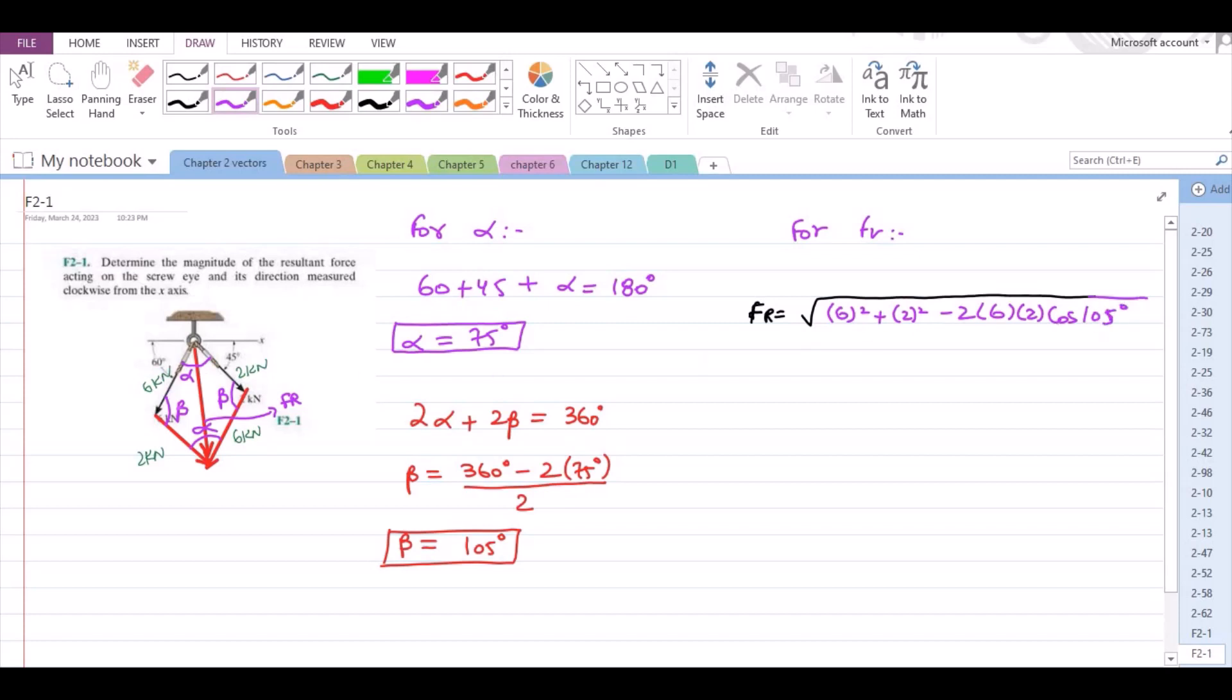Because opposite to FR is angle beta. From here we have FR is equal to 6.8 kilonewtons. Now, this is our first answer.